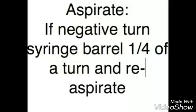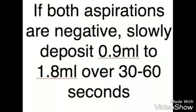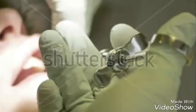Aspirate on two planes. If negative, turn syringe barrel one-fourth of a turn and re-aspirate. If both aspirations are negative, slowly deposit 0.9 to 1.8 milliliters over 30 to 60 seconds.